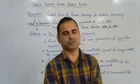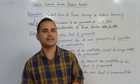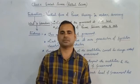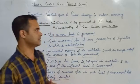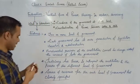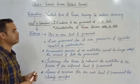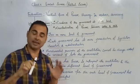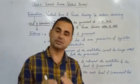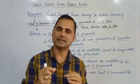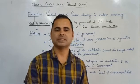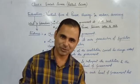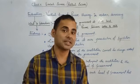A federal state is just opposite to the unitary state. So it is very important to understand the features of federalism. In federalism, you find two or more levels of government. In any federal state there is an existence of two or more levels of government. Take the case of our country — we have government at the center level, state level, and community level. So we have more than two levels.